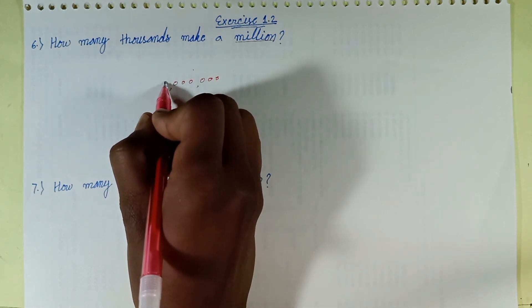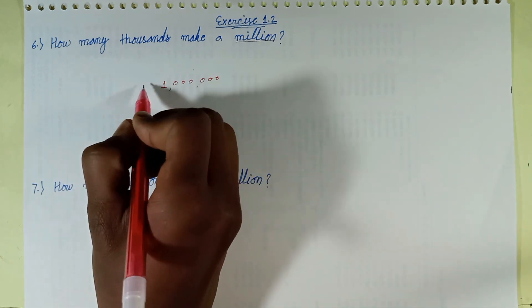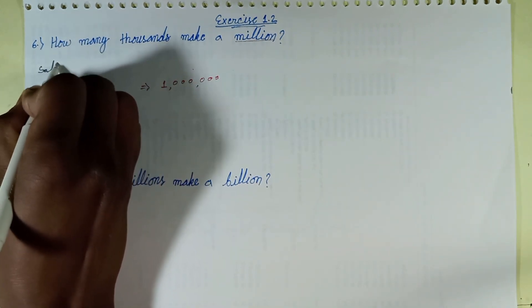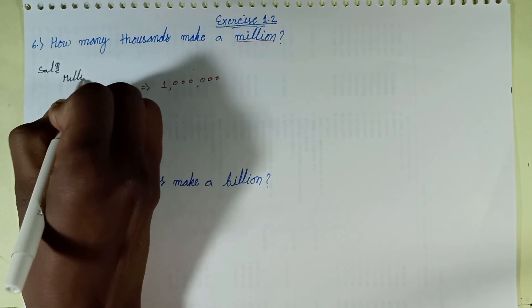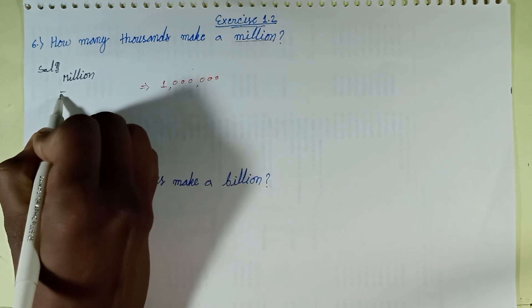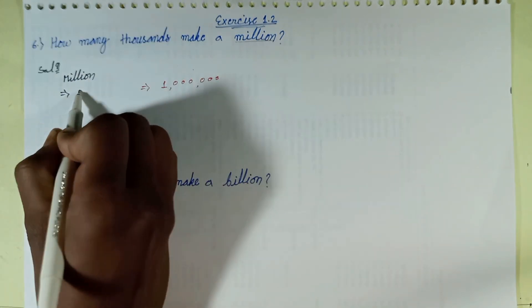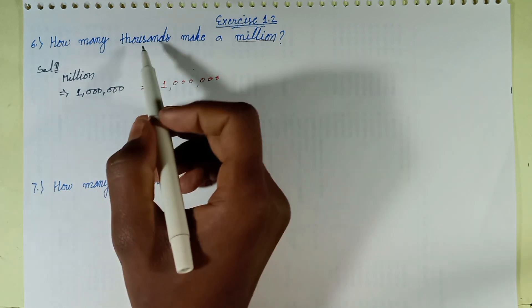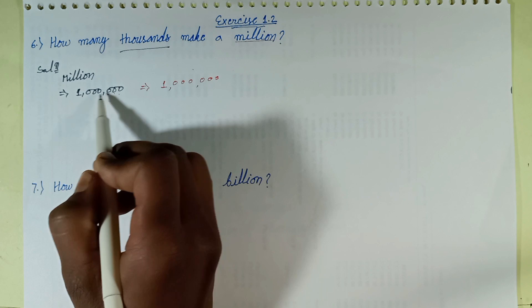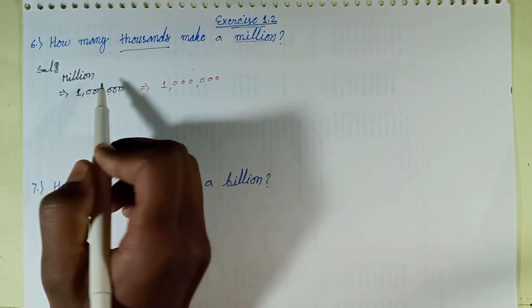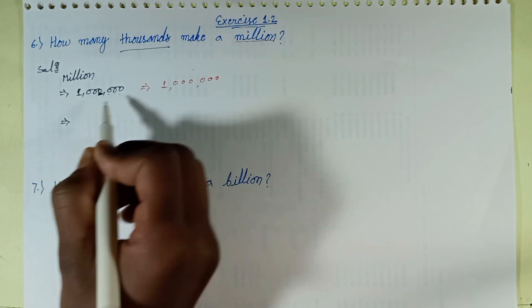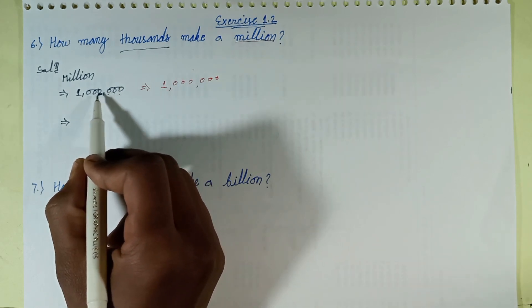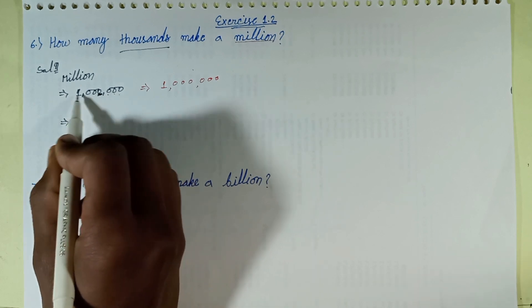Let's solve it. One million is written as 1,000,000 — that is, 1 comma 000 comma 000 in the international system. Counting right to left, there are four digits in the thousands place: ones, tens, hundreds, and thousands.